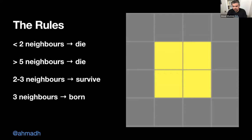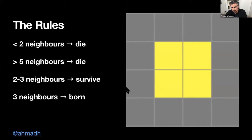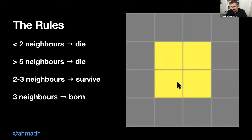Here's another pattern with four live cells. Each of the four live cells has three neighbors. The dead cells around them have only one or two neighbors. So we don't have any dead cells with three neighbors and no live cells with fewer than two or more than three neighbors. Whatever is dead stays dead and whatever is alive stays alive.